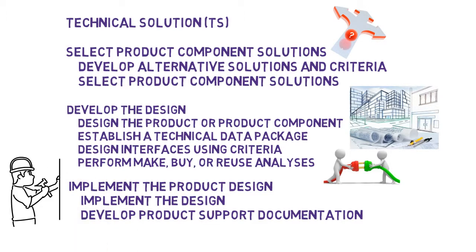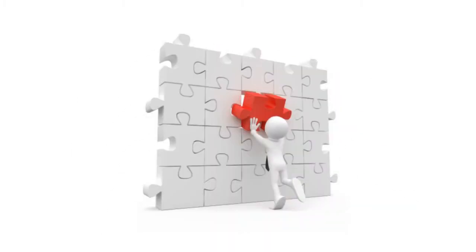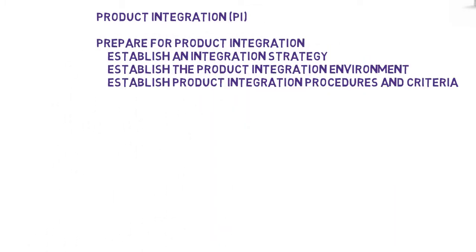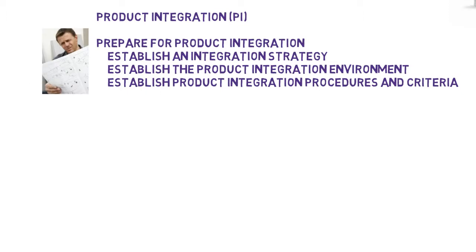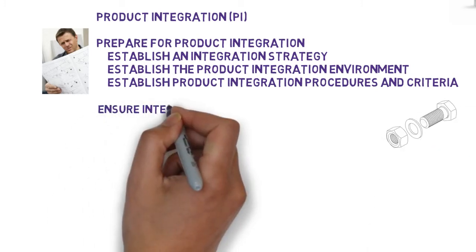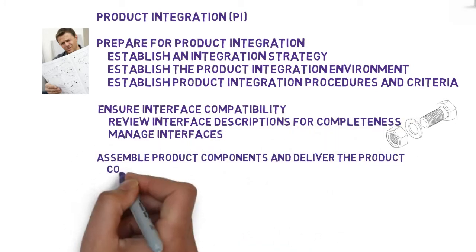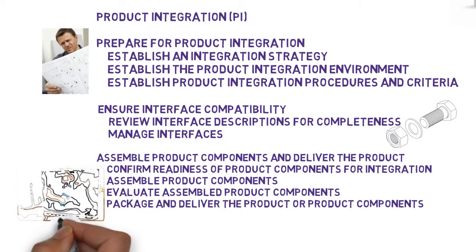Before we ship the product, we want to make sure all the parts fit and work together. The product integration process area focuses on this, and overlaps a bit with testing and validation activities. But the primary purpose of the process area is to make sure that the product has final integrity before we release it. The first goal is about having an integration approach and sequence, making sure the integration environment is as close as possible to the operating environment, and being disciplined in how we go through the integration process. The second goal focuses on making sure the interfaces are complete, work together, and are managed as integration occurs. And the third goal focuses on actually integrating the product to make sure all the parts work together, then packaging and delivering the product.